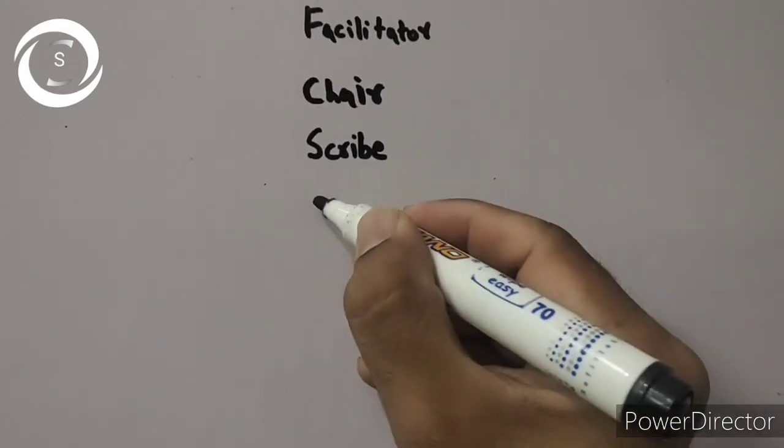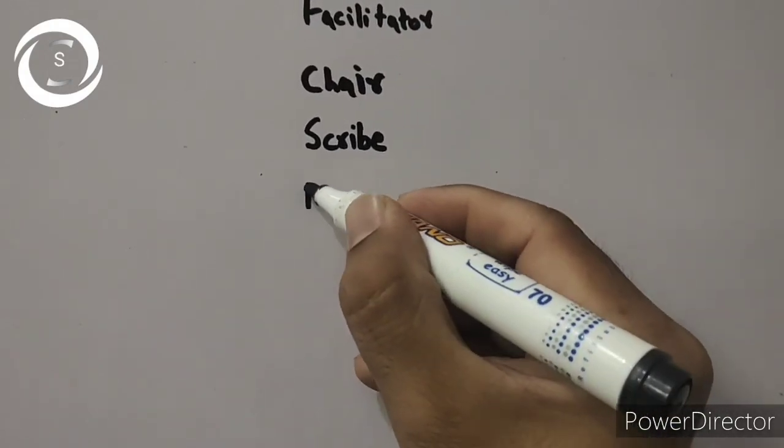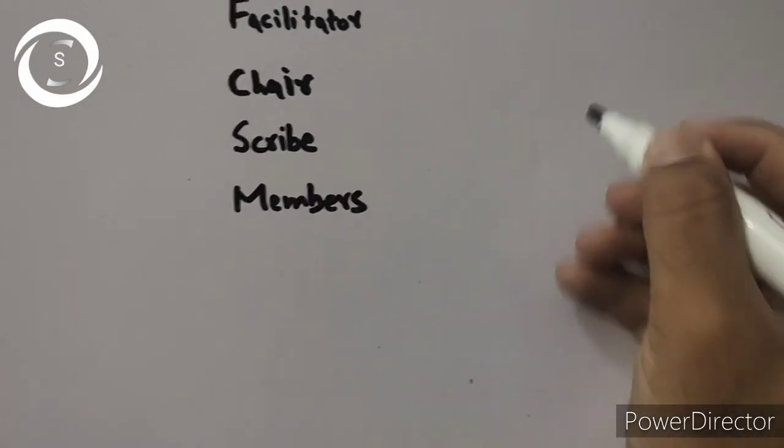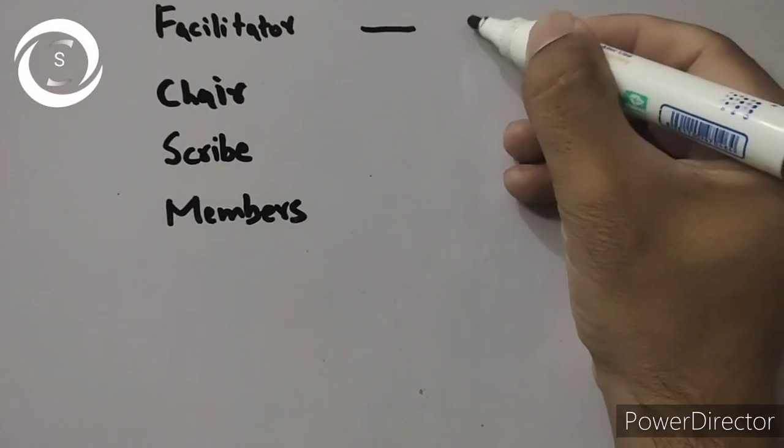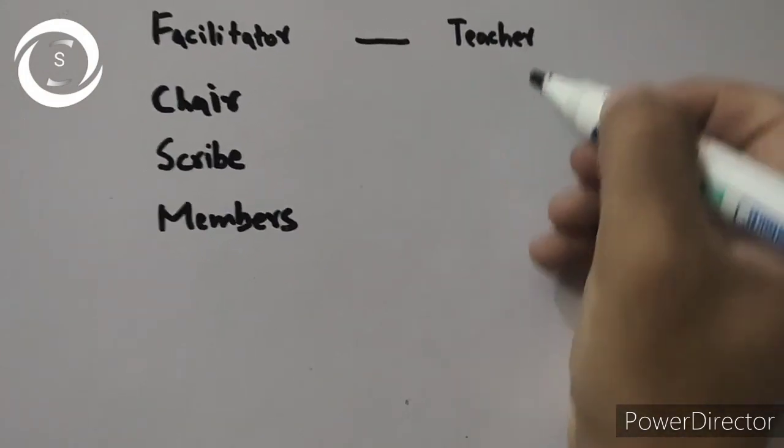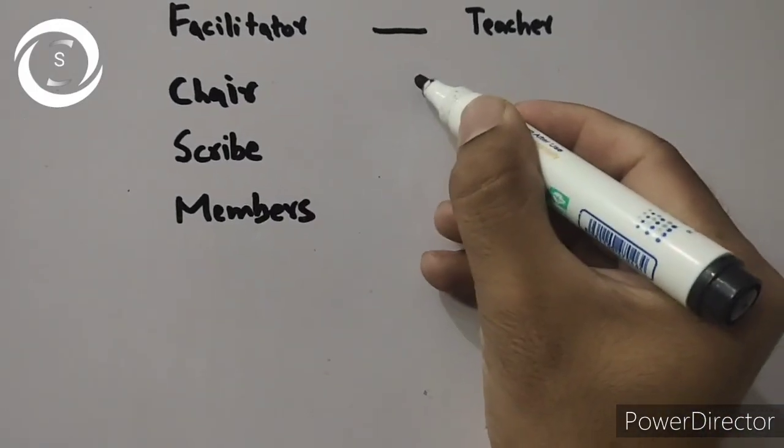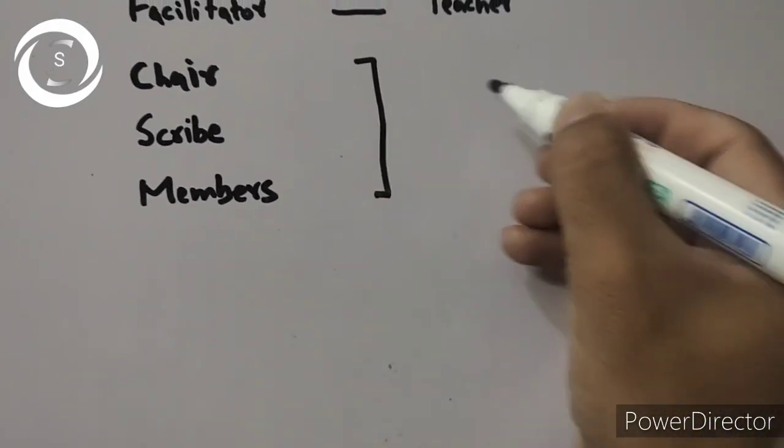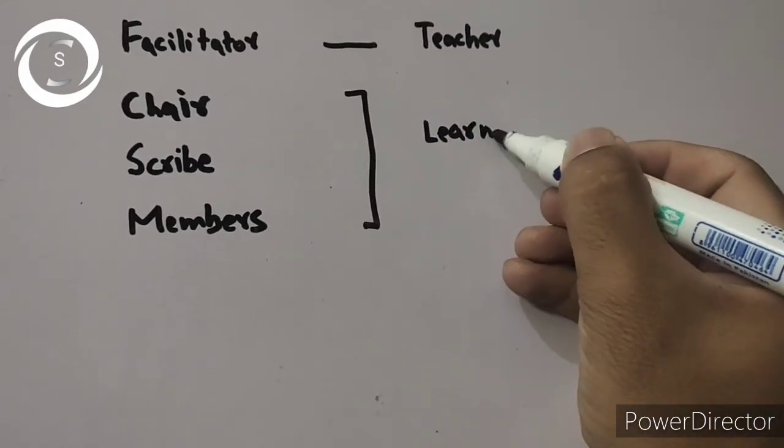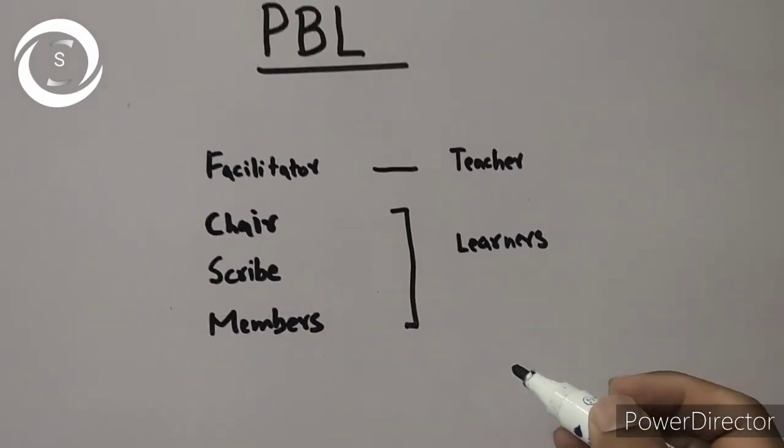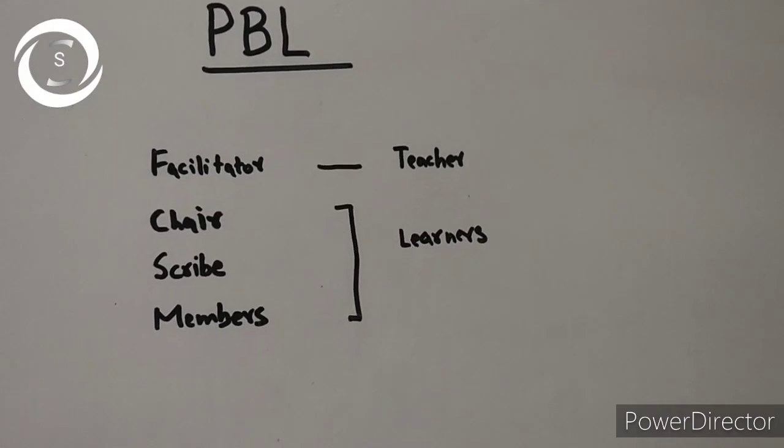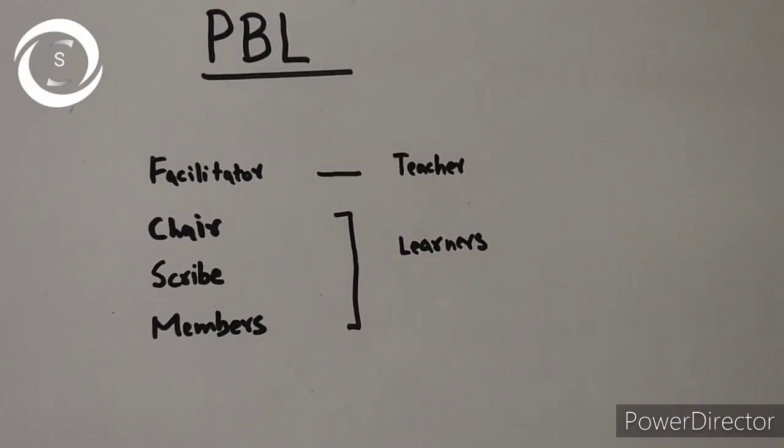Tutor role is to encourage all the group members to actively participate, assist chair with group dynamics and keeping to time, keep check on the scribe that whether he is recording all the group activity or not, prevents side tracking like the students are on the problem to be discussed or they are side tracking to another scenario, ensure group achieve appropriate learning objectives, check understanding and assess performance.